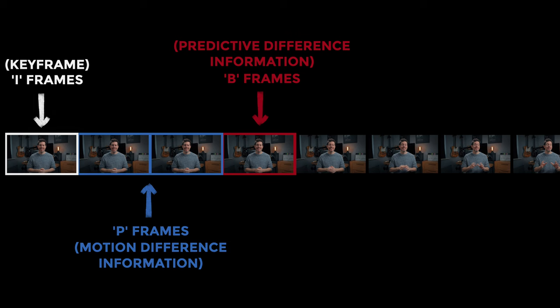The amount of P frames and B frames in that long group of pictures determines the compression level. The more of those frames, the more compression there is and the smaller your file sizes — but it's more work for your computer.